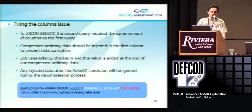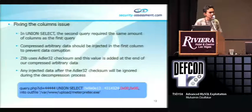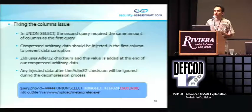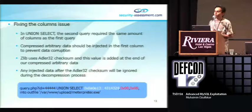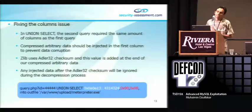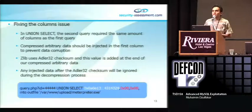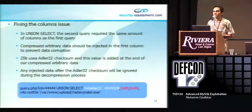Fixing the column issue: in UNION SELECT, the second query requires the same number of columns as the first query. Most of the time you need to inject some unnecessary data into extra columns. To prevent data corruption, our arbitrary file needs to be injected in the first column. When we compress our file, Zlib uses Adler32 checksums, and this value is added at the end of the compressed arbitrary file. Per the RFC, anything after this value will be ignored during decompression, so we can simply abuse this functionality. Another method is splitting our arbitrary file across the number of columns and injecting data sequentially into each column.